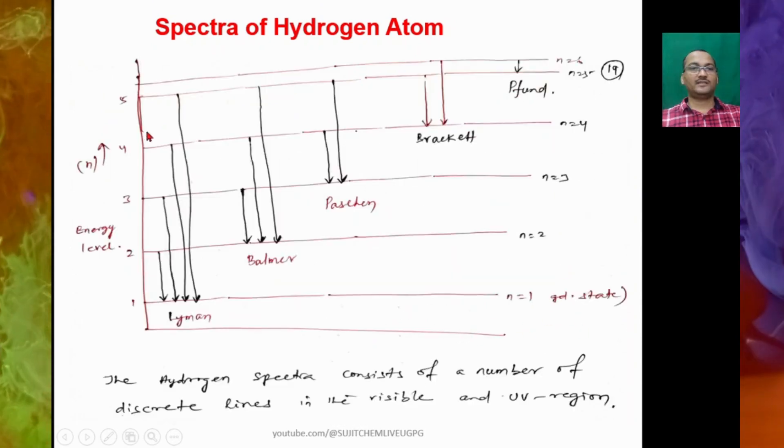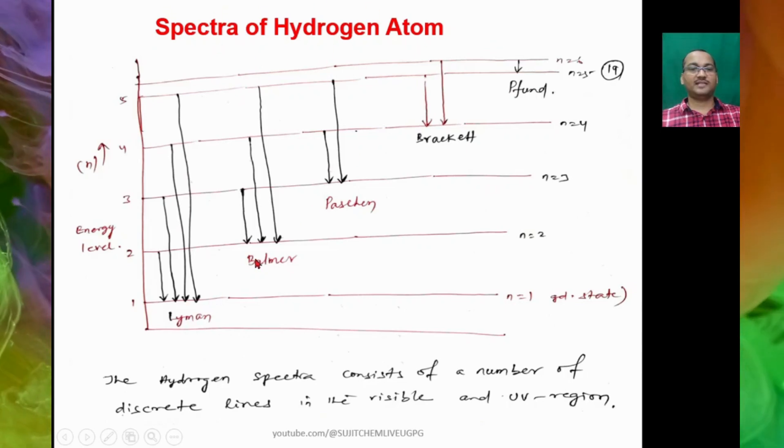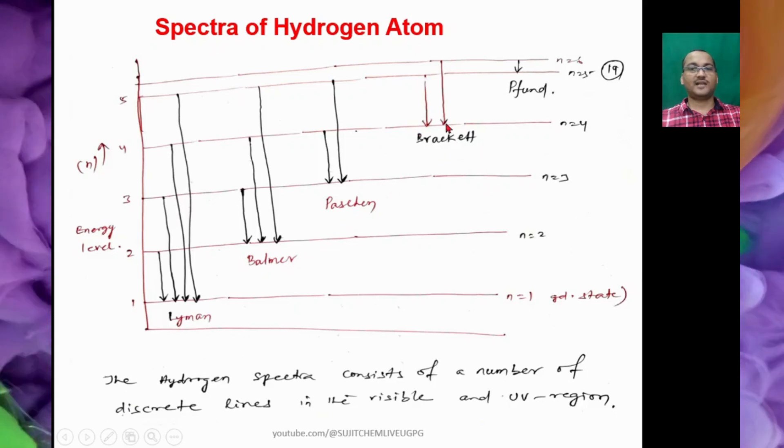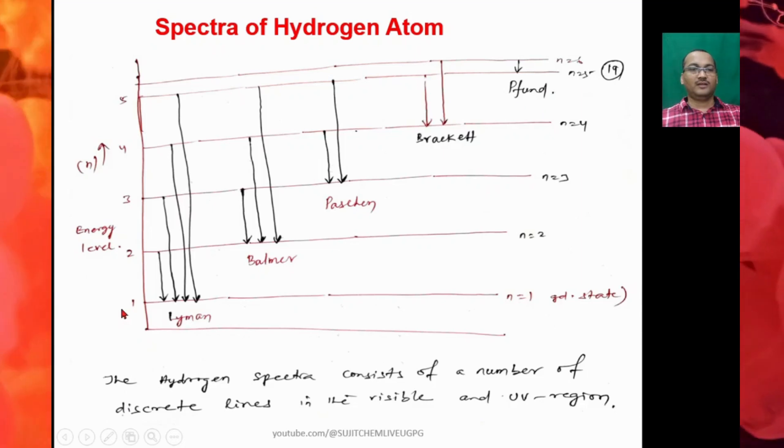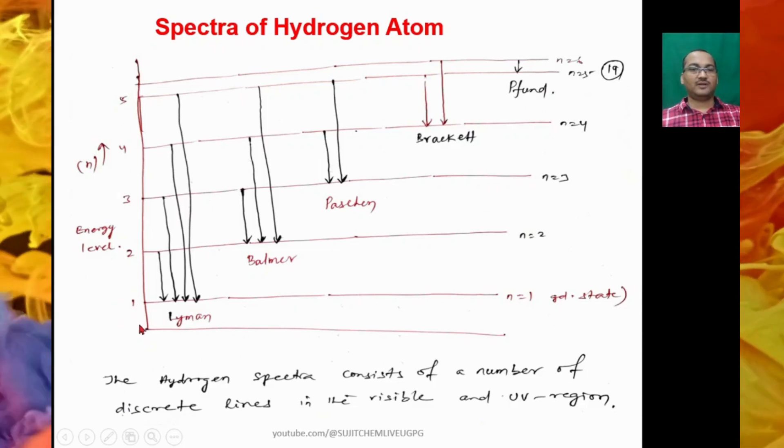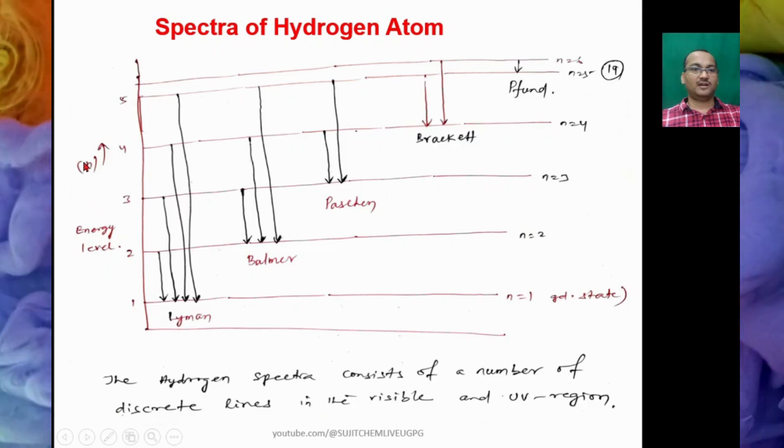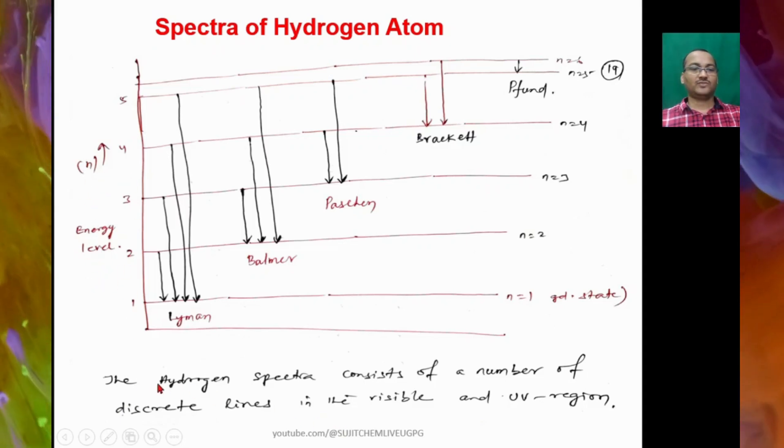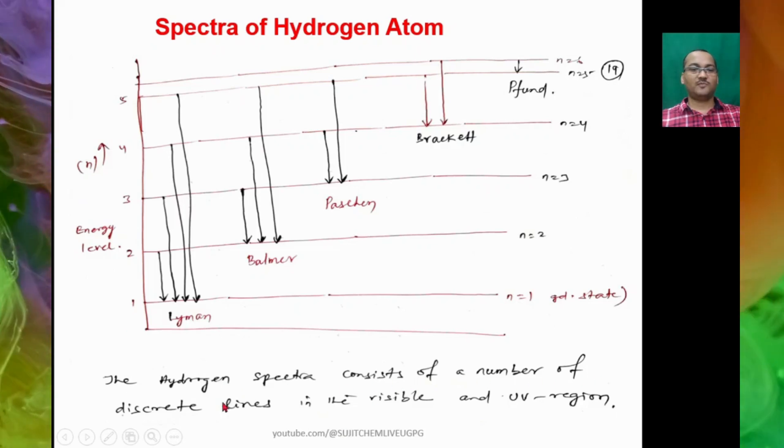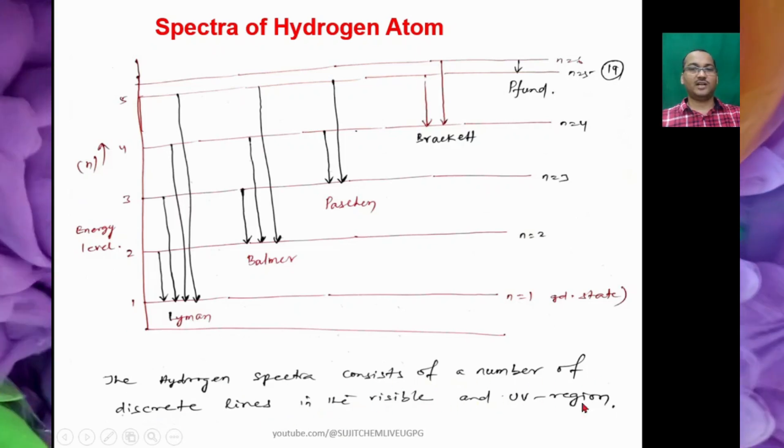So here you can see the spectra of hydrogen atom like Lyman series, Balmer series, Paschen series, Brackett series, and Pfund series. And this is the graph where you can have different energy levels. The hydrogen spectra consists of a number of discrete lines in the visible and UV region.